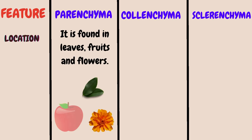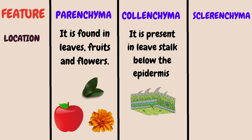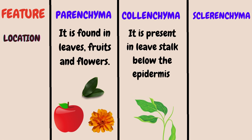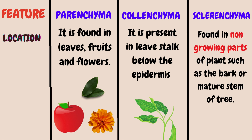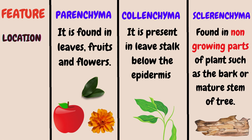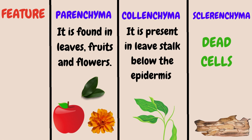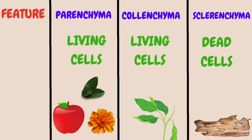The next feature is their location. Parenchyma tissue is found in leaf, fruit and flowers. On the other hand, collenchyma is present in leaf stalks below the epidermis — the epidermis being the outer layer of any plant, and the stalk being the part from which the leaf connects to the branch. In the case of sclerenchyma, it is found in non-growing parts of the plant such as the bark or mature stem of a tree — that brown layering we see on some plant stems. Sclerenchyma is made up of dead cells, but parenchyma and collenchyma are formed of living cells.